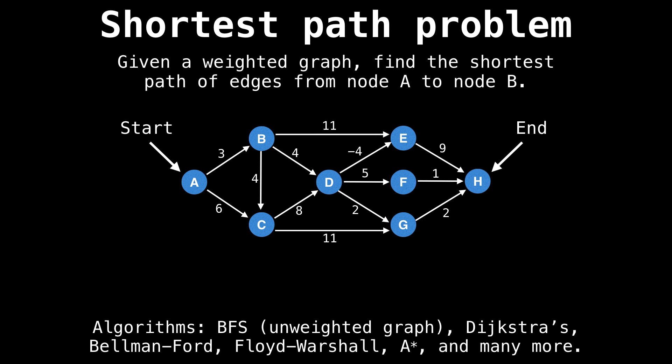One of the most, if not the most, common problem in graph theory is the shortest path problem. Given a weighted graph, find the shortest path of edges from node A to node B.